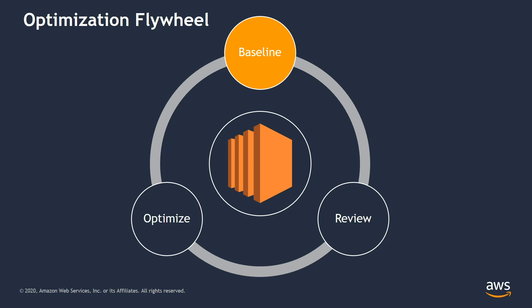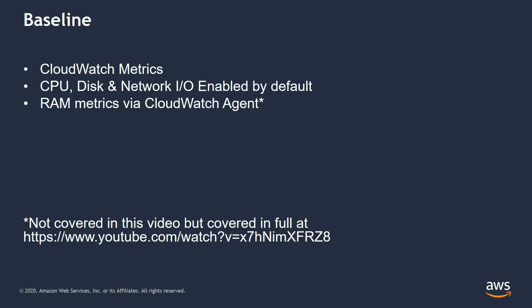So how do we kick off this process and get the flywheel moving? At the top of our flywheel, we have the baseline step. Here we need to establish what we currently have in our environment, and we do so by using data — in this case, metrics data like CPU utilization, memory utilization, and network input-output. In AWS, we utilize the Amazon CloudWatch service to get information about how our instances are performing — more specifically, how much CPU and RAM or network we are consuming over time.